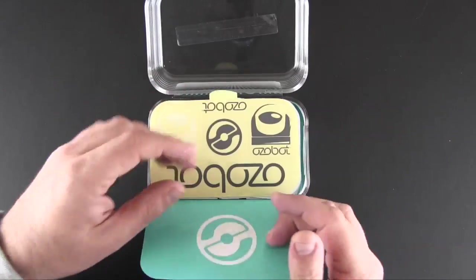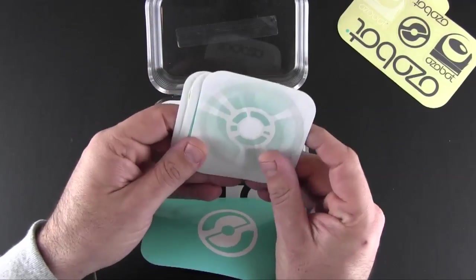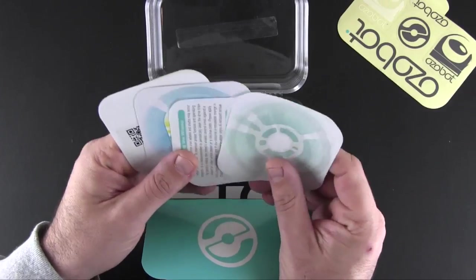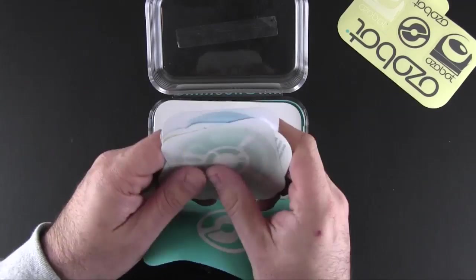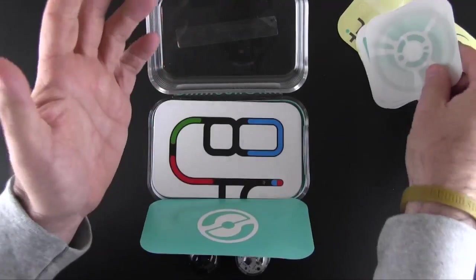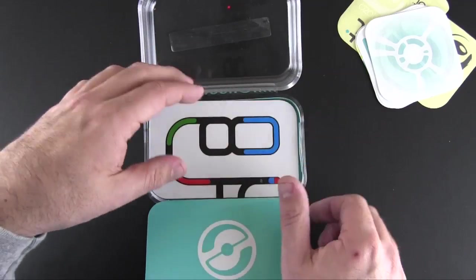Inside here you get actually a lot of stuff which I want to show you. Let me get all this packaging out of the way. There are some stickers, some instructions, and probably more importantly there is a calibration card. You do have to calibrate the OZOBOTs based on what surface you plan to place them on.